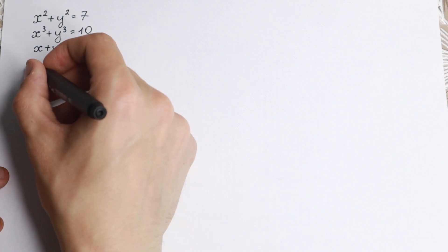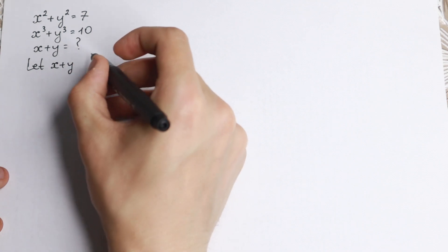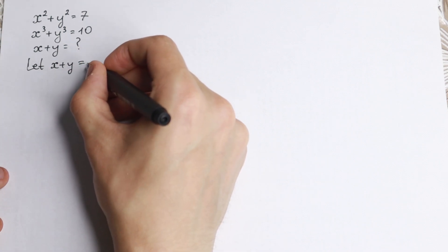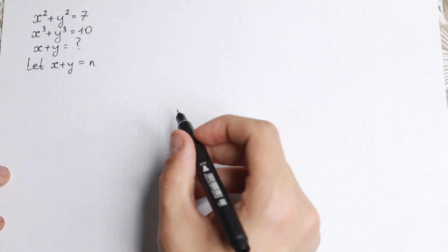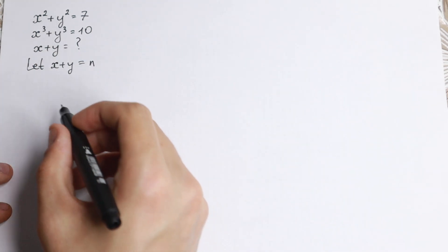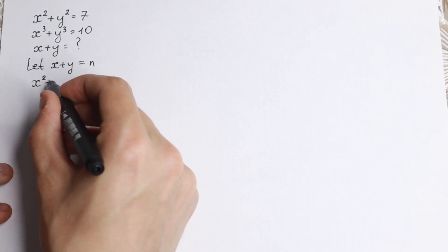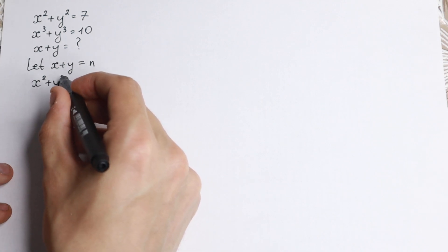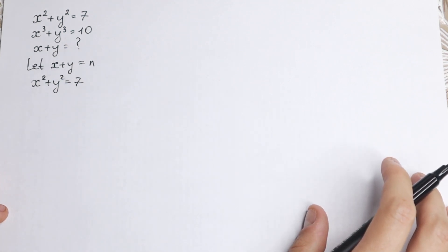First of all, let's say that the sum we need to find — x plus y — will be equal to n. So this sum equals n. Now I want to start with the first equation: x squared plus y squared equals 7.